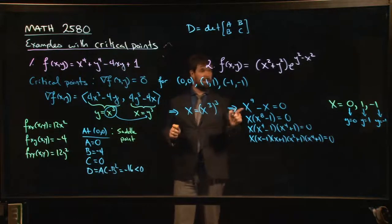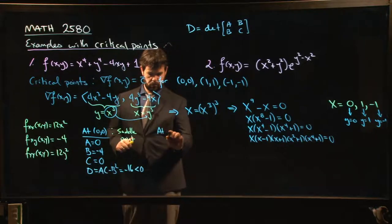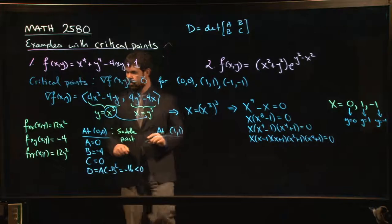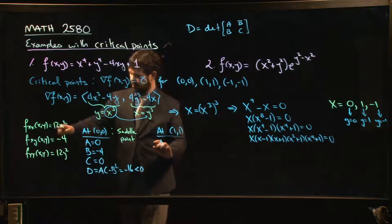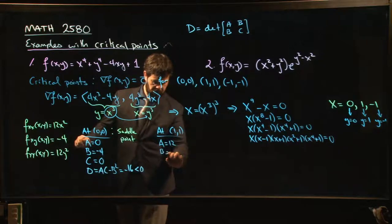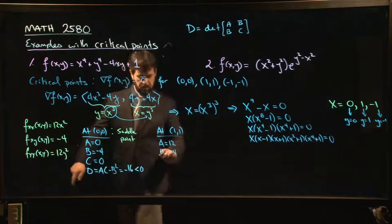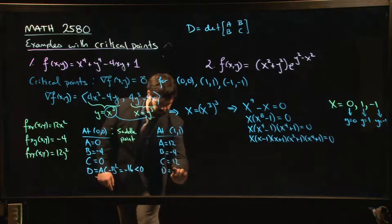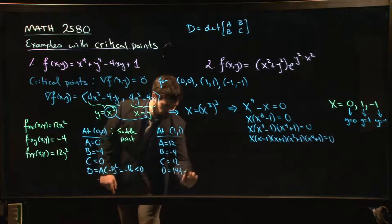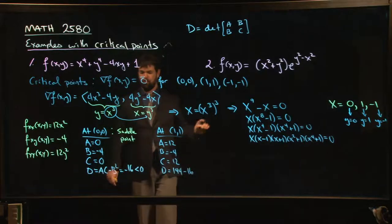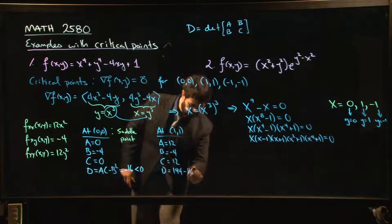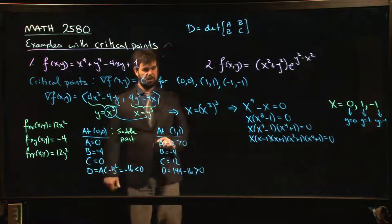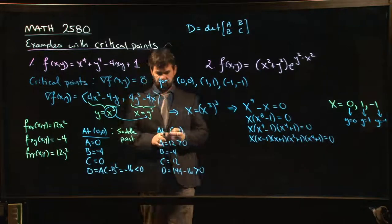What about at (1,1)? If x equals one, y equals one, we have that a, if I put x equals one in here, a is 12. b is still -4. c is 12. d: a times c is 144 minus 16. We don't even need to bother with this subtraction - all we need to realize is that is definitely positive. So d is positive, a is positive.